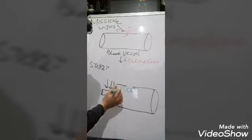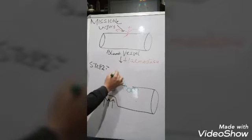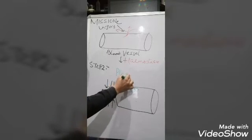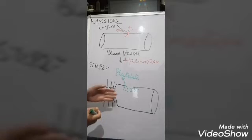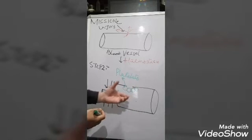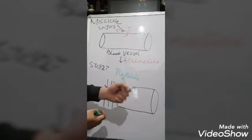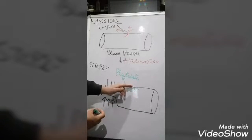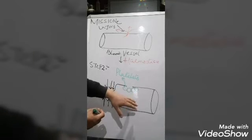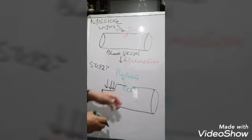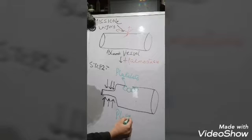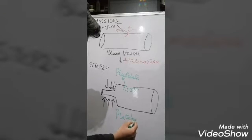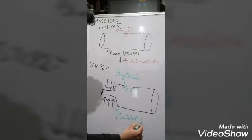In step two, certain cells arrive at the injury site where bleeding is occurring and form a wall to close that region. These cells are actually platelets. Since many platelets assemble together, they form a wall at the injury site. This aggregation of platelets we call the platelet plug.